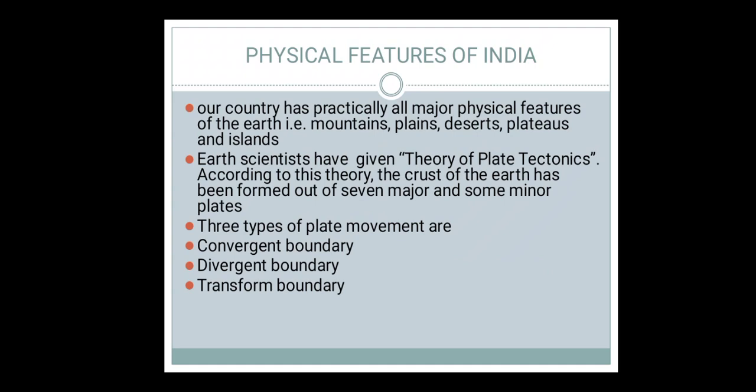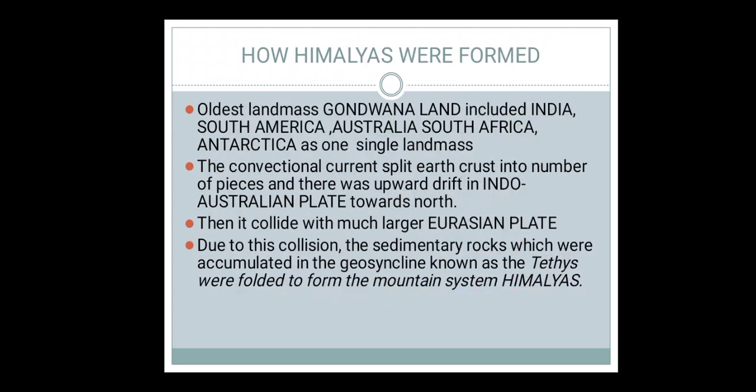Convergent boundary is when two plates come towards each other. Divergent boundary is when two plates go away from each other. In transform boundary, plates move sideways — up and down — against each other.